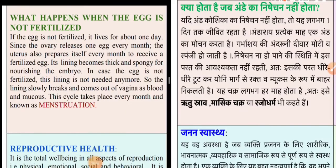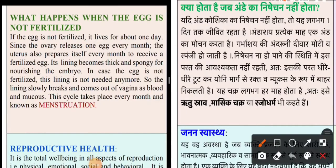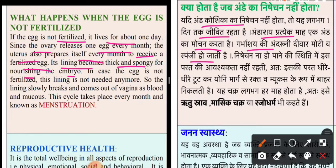Next point: what happens when the egg is not fertilized? If the egg is not fertilized, it lives for about one day. Since the ovary releases one egg every month, the uterus also prepares itself every month to receive a fertilized egg. Its lining becomes thick and spongy for nourishing the embryo. When the egg is not fertilized, the lining is not needed anymore, so the lining slowly breaks and comes out of the vagina as blood and mucus. This cycle takes place every month and is known as menstruation.